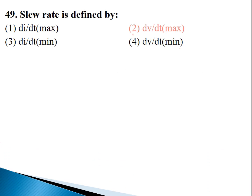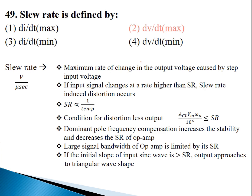Slew rate is the maximum change in the output voltage when the input is a step signal. Therefore the correct option is second. Slew rate is change in output voltage with respect to time, and it will be maximum. We calculate the slew rate for step input voltage. These are some important points that have come in previous papers like IES and state examinations. The first point: maximum rate of change of output voltage when input voltage is step — this is the definition of slew rate.